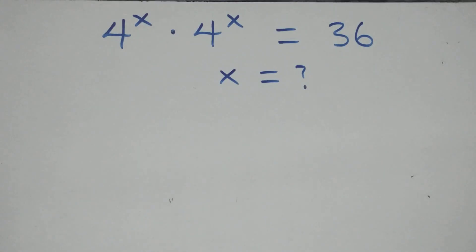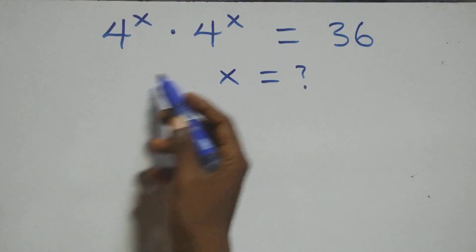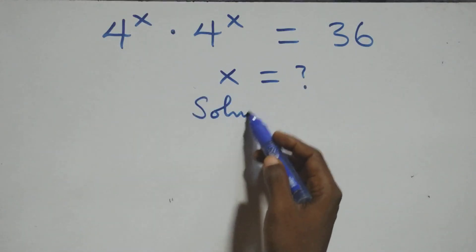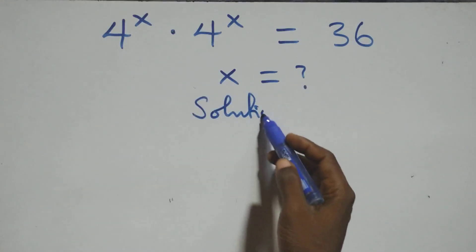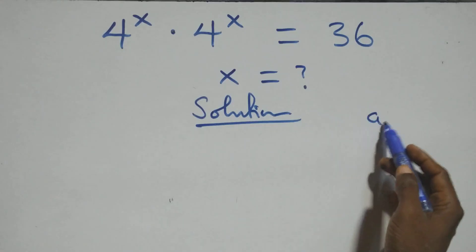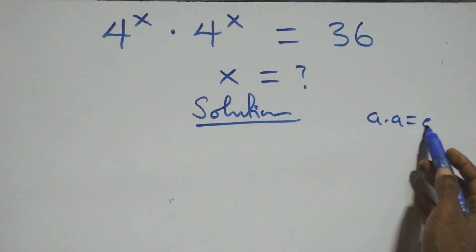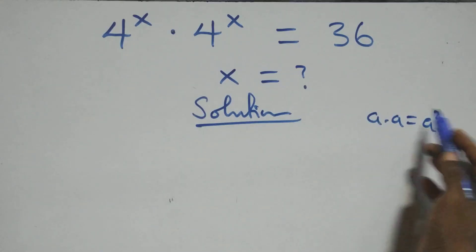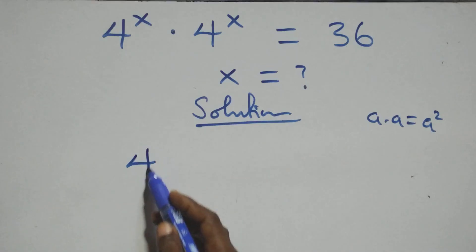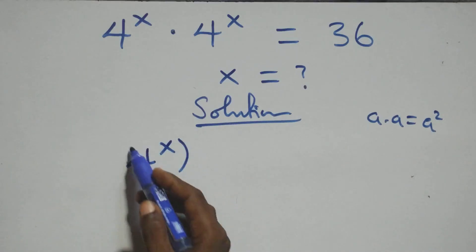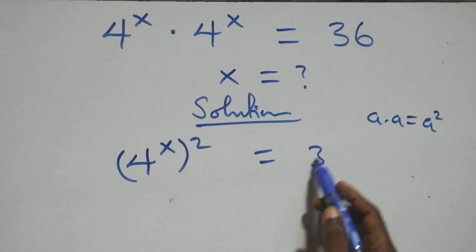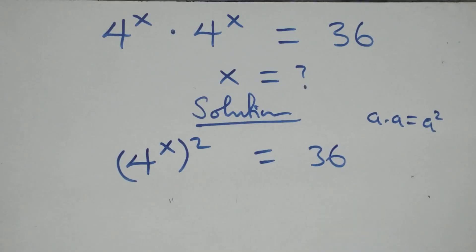Hello, you are welcome. How to solve this nice exponential equation. What we have here: this follows when we have a times a, the same thing as a squared. And this same thing multiplying here: 4 raised to the power x, all squared, equals 36.